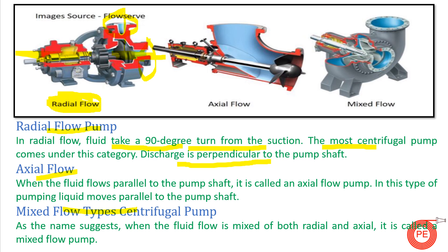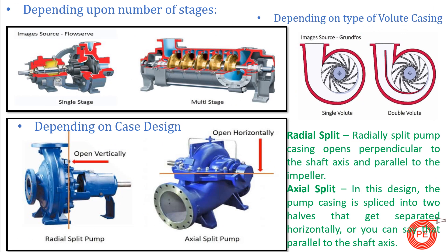Next is the axial flow pump — when fluid flows parallel to the pump shaft it is called an axial flow pump. The liquid moves parallel to the pump shaft in this configuration. The mixed flow pump, as the name suggests, is a mixture of radial flow and axial flow. Mixed flow pumps are generally not used in industry but are applied for some critical services or special applications.